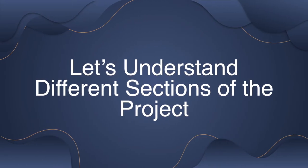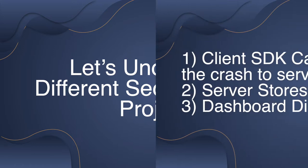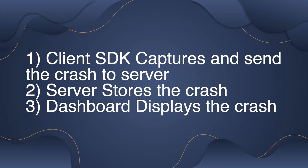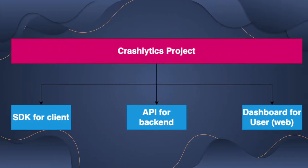There are three main sections of this project. First, whenever there is a crash, it needs to be sent to the server, so we need a client SDK to capture the crash and send it to the server. Second, we need a server to store the crashes. Third, we need a web dashboard to display the crashes from the server. The client SDK interacts with the API, and the dashboard also interacts with the server using the API.